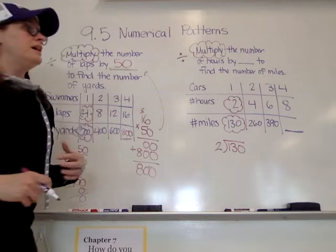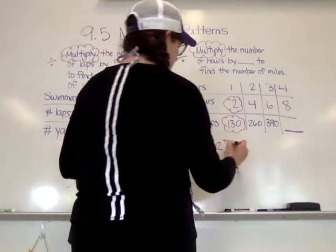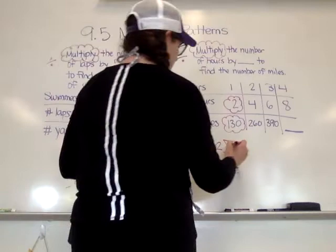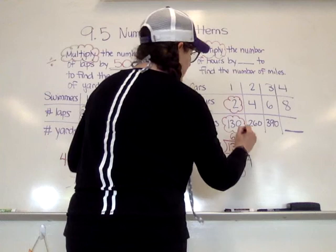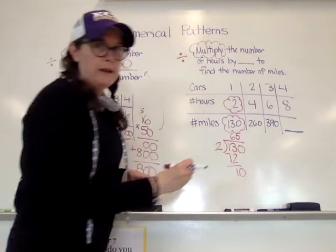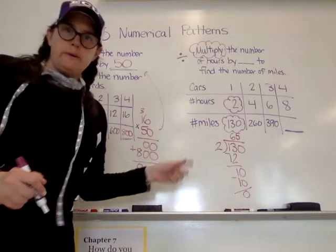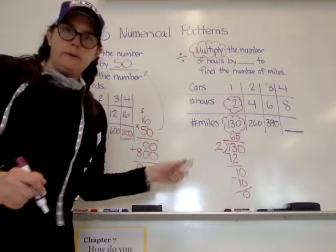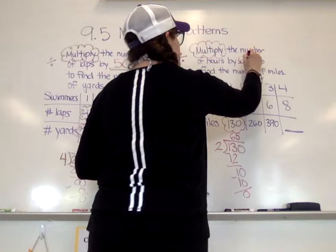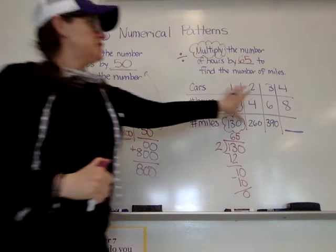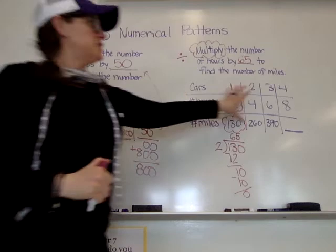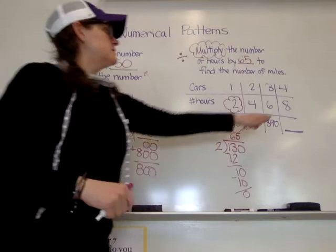A lot of you can do this in your head, but you need to know how for upper math classes. So we're dividing 2 into 13: 6 times, left with 10. 2 into 10 is 5. And 0 remainder. Quick note: if you don't get a remainder of 0, you did something wrong — you will not have remainders for these problems. So 65 is the number you're multiplying by: the number of hours by 65.